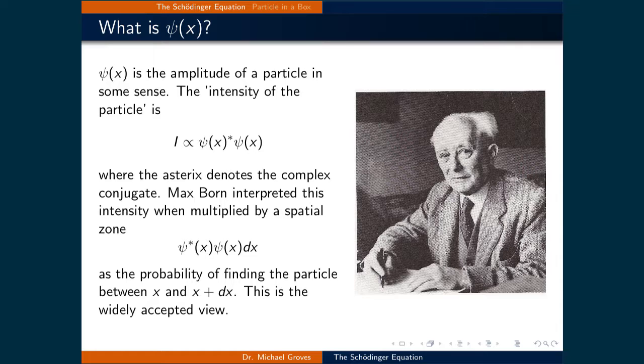Max Born, who is pictured on the right, interpreted this intensity when multiplied by a spatial zone as the probability of finding a particle between x and x+dx. This is the widely accepted view, and it means that the intensity of a particle described by the Schrödinger equation is actually a probability distribution function. This means that for a given scenario, we can solve the Schrödinger equation and get a wave function which describes our particle, and then apply probabilistic theories to extract measurable quantities regarding our particle.